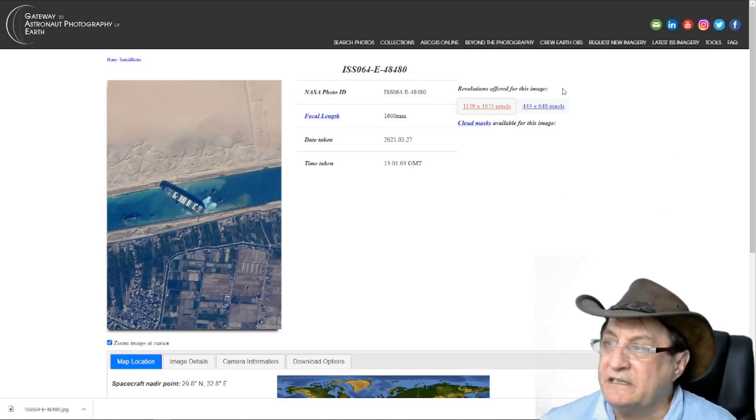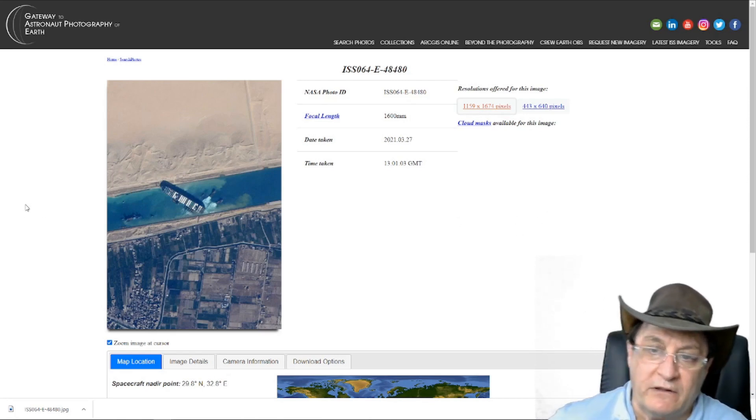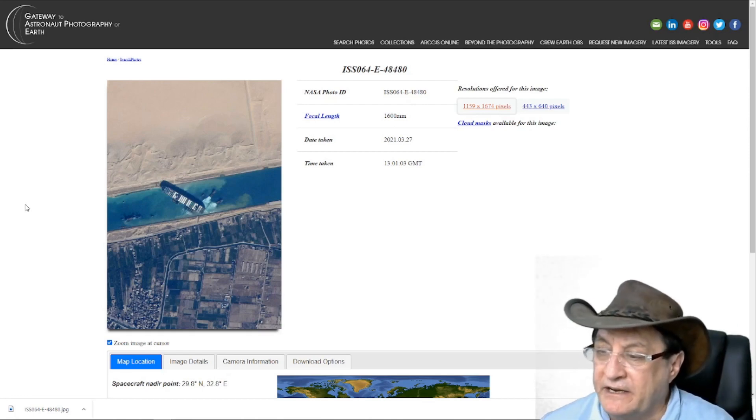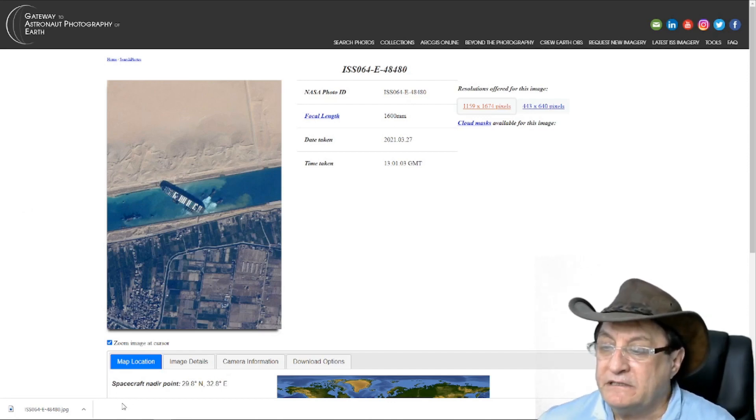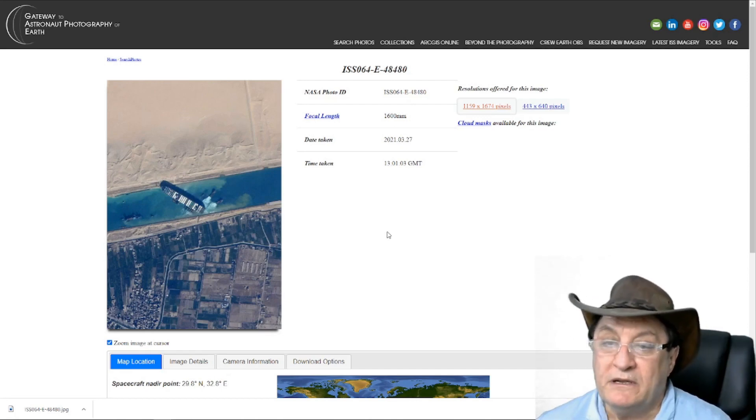In particular this one here is only 1159 by 1674 pixels. So it is a little bit more difficult because it's a cropped picture. I know it's cropped because the camera has a bigger resolution than that. Now also in this information the spacecraft Nadir point is given. Now this is the point above the Earth. If you were to draw a line perpendicular from that point then you would intersect the ISS. So it's the point on the Earth that is directly below the ISS.